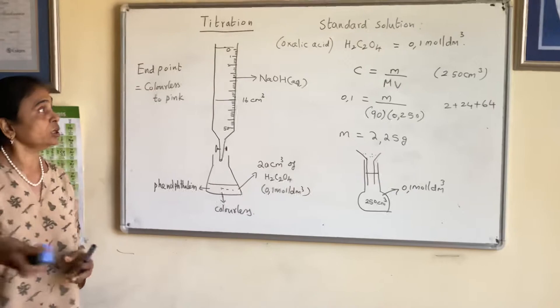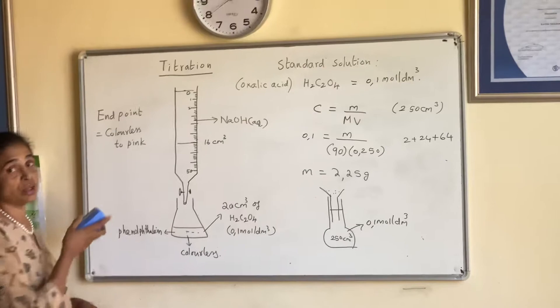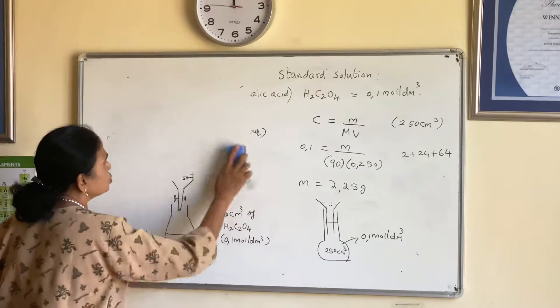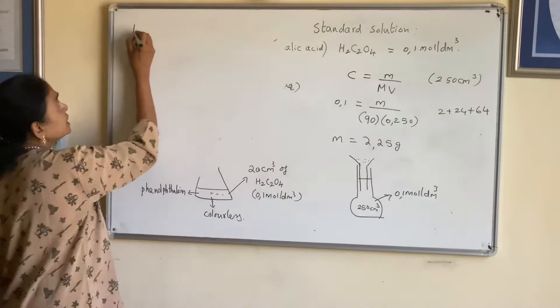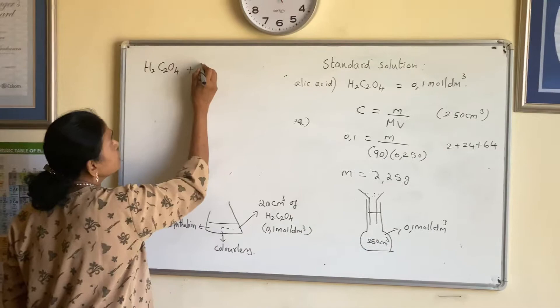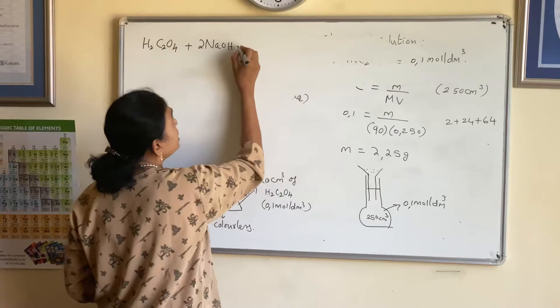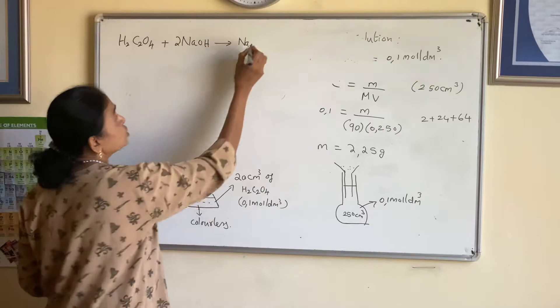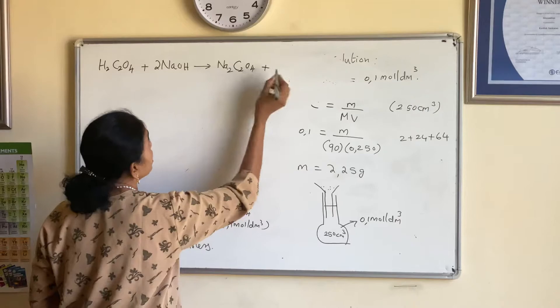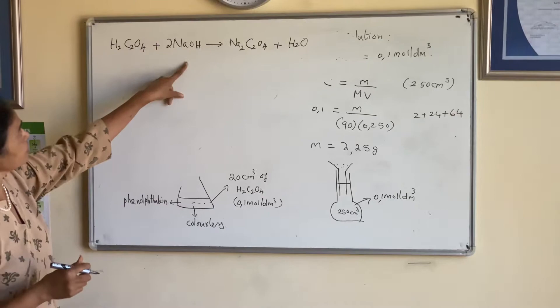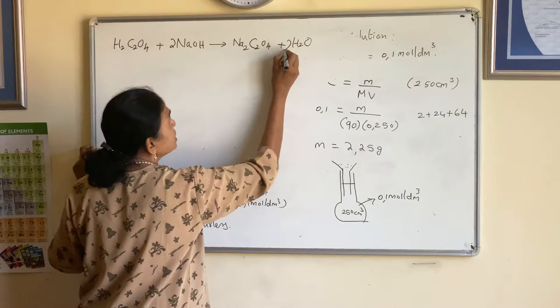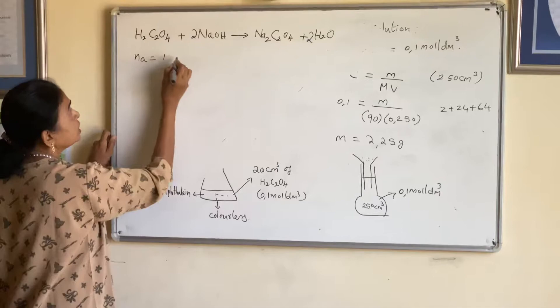For calculations, first write the equation for the neutralization reaction. Oxalic acid H₂C₂O₄ reacts with sodium hydroxide. The products are sodium oxalate and water. The mole ratio here is: number of moles of acid is one and number of moles of base is two.